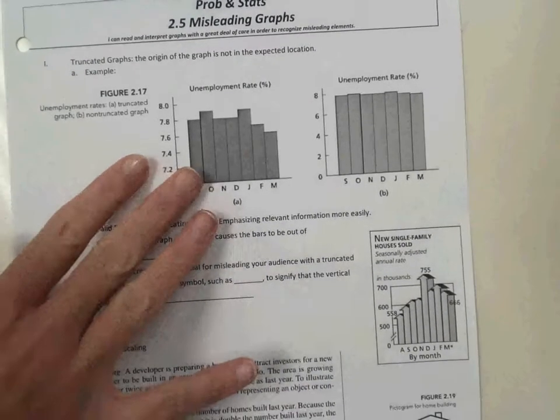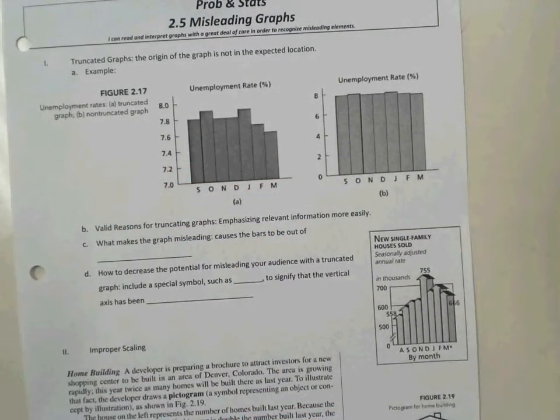So, truncating. Take a look at graph A and graph B. Which one would you prefer to look at? Raise your hand if you feel like A is easier to look at. B, raise your hand.